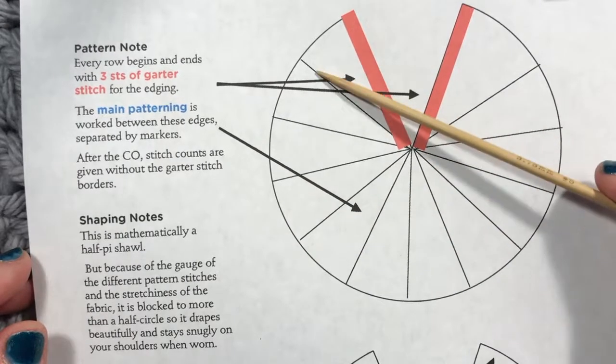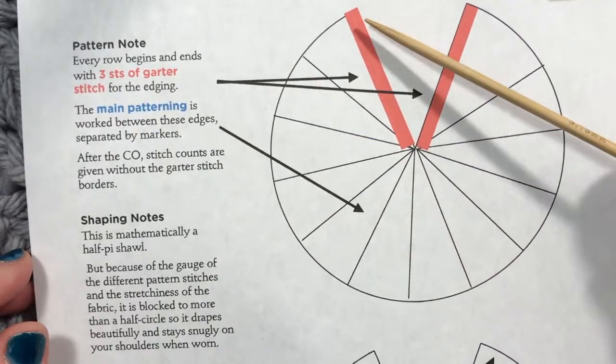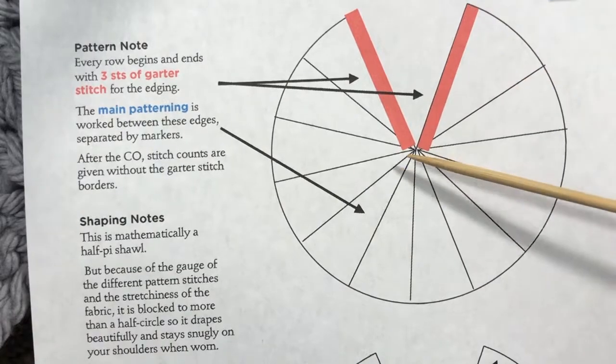In the beginning of the knit along, we're just going to do the outside edge. That's what I wanted to show you here.